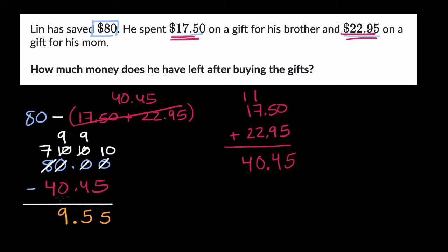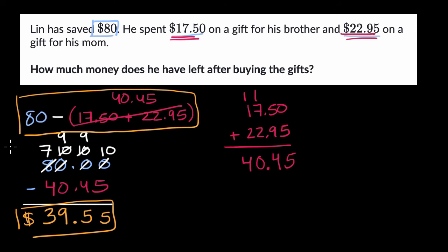Nine minus zero is nine. Seven minus four is three, and there we have it. He is left with $39.55. That's what all of this business is equal to.